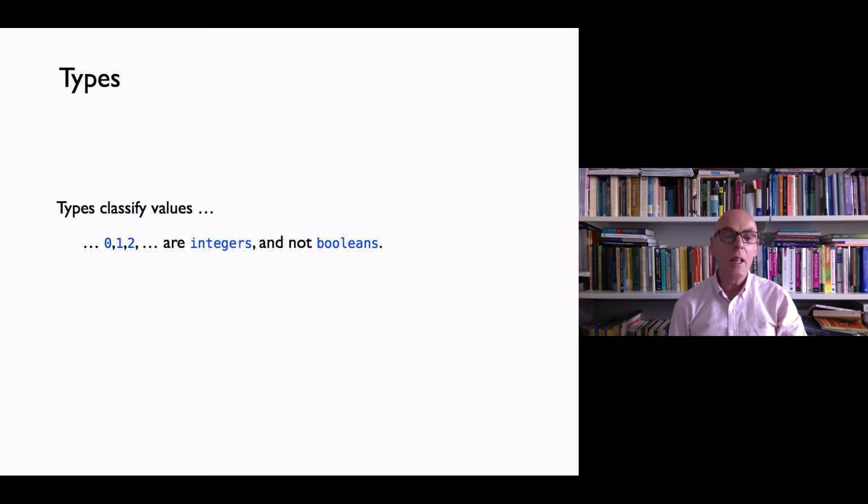In general, a type classifies a set of values. So for example, 0, 1, 2 are integers and true and false are booleans, but 0, 1, 2 are not booleans. We classify things according to what we can do to them, so for example we can take the OR of two booleans but not the OR of two numbers.